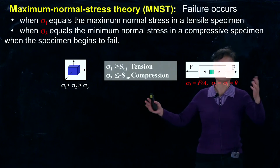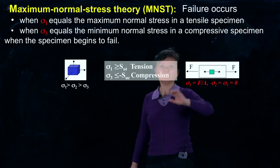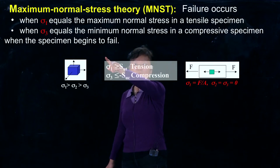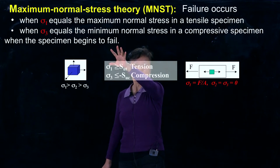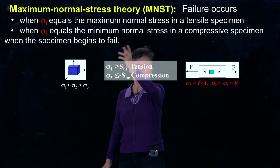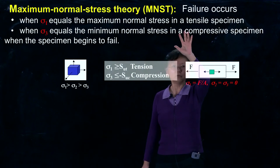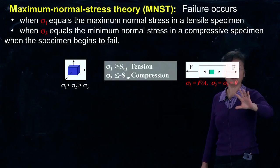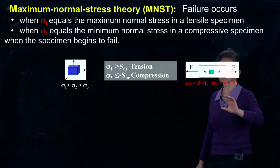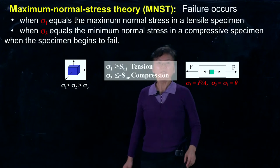This gives us a definition: our part fails if σ1, which is the largest normal stress, equals or is larger than the maximum normal stress in the tensile stress case. When failure happens to this case, we consider our part starts to fail.